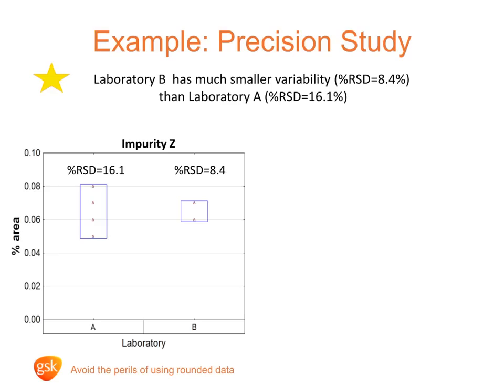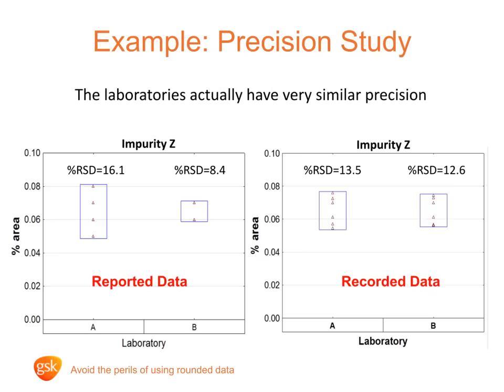Let's plot the recorded data. So actually both labs are performing very similarly, and we can see the points better. The moral of the story is to always use recorded data — otherwise known as unrounded data — in calculations and visualisations.